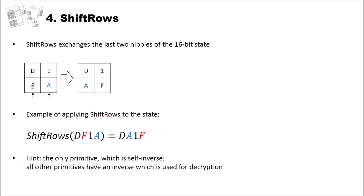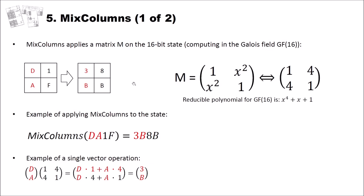Now let's have a look at the Mix Columns step, which is in my opinion the most difficult to understand. Mix Columns applies a matrix M to the 16-bit state, and we compute the matrix not in the normal number system — we use computing in the Galois field GF(16). What this is, I won't explain in detail here; I plan to create a new video describing this. We have our state DA1F, and we apply the matrix [1, x²; x², 1], equivalent to [1,4;4,1], computed in GF(16) with the reducible polynomial x⁴ + x + 1. Applying Mix Columns to DA1F, we obtain 3B8B.